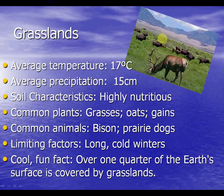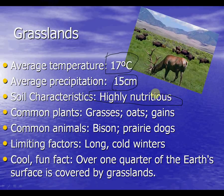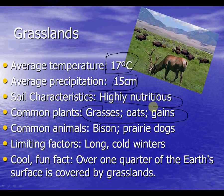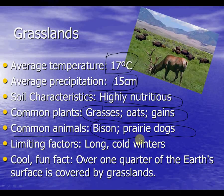The grassland biome has an average temperature of 17 degrees Celsius and precipitation of 15 centimeters. The soil is highly nutritious, which means we can grow crops here — it's a very good place to have a farm. Common plants are grasses, oats, and grains. Common animals are the bison and prairie dogs.